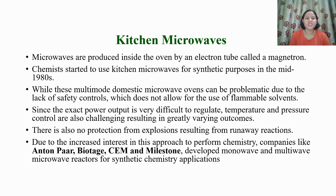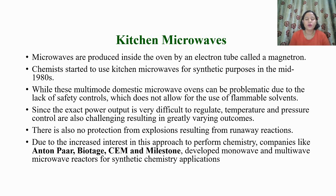Microwaves in kitchens are produced inside the oven by an electron tube called a magnetron. Chemists started to use kitchen microwaves for synthetic purposes in the mid-1980s. However, domestic microwave ovens have problems due to lack of safety controls, which do not allow the use of flammable solvents. The exit power output is very difficult to regulate, temperature and pressure controls are not present, there is no protection from explosions, and runaway reactions can also take place.